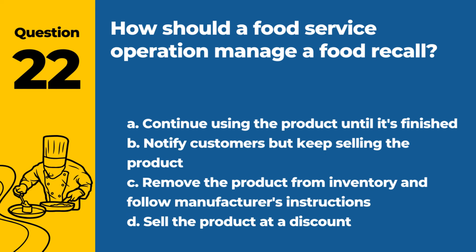Question 22. How should a food service operation manage a food recall? a. Continue using the product until it's finished. b. Notify customers but keep selling the product. c. Remove the product from inventory and follow manufacturer's instructions. d. Sell the product at a discount. Answer: c. Remove the product from inventory and follow manufacturer's instructions. This ensures the safety of customers and compliance with health regulations.